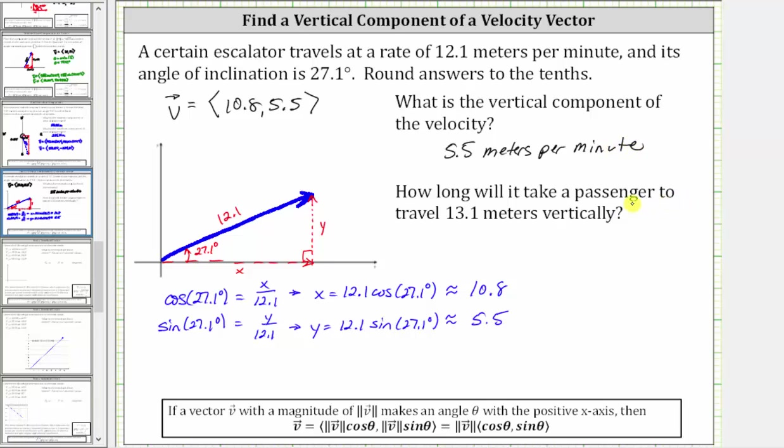The second question is how long will it take a passenger to travel 13.1 meters vertically? For this we need to remember the formula distance equals rate times time. The vertical distance is 13.1 meters and the vertical rate is the rate of 5.5 meters per minute. So we have 5.5 for r and t is time in minutes.